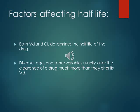Now here we discuss the factors affecting the half-life. As we have already discussed the formula, we know the plasma half-life of the drug is dependent on both volume of distribution and clearance. Disease, age and other variables usually alter the clearance of the drug much more than they alter its volume of distribution. Changes in any one of these, volume of distribution or clearance, can change the plasma half-life of the drug.